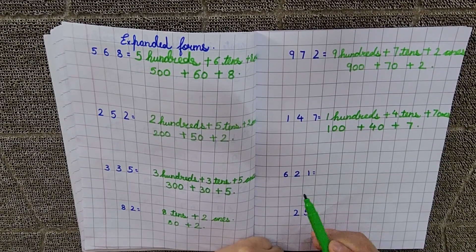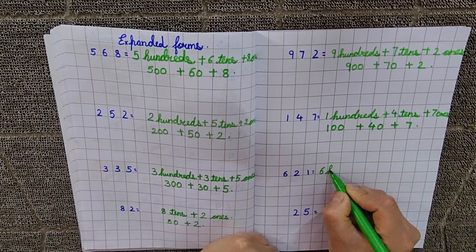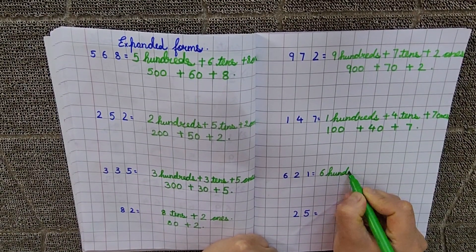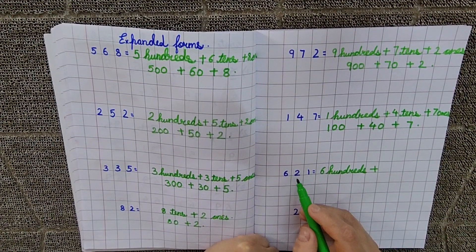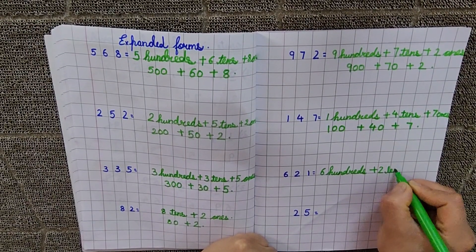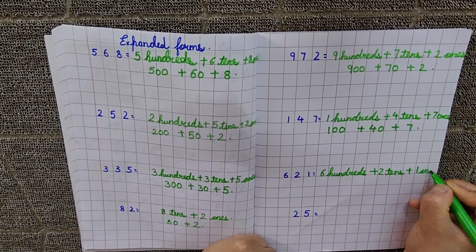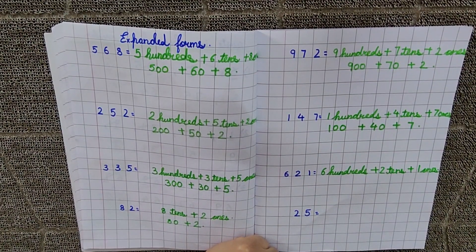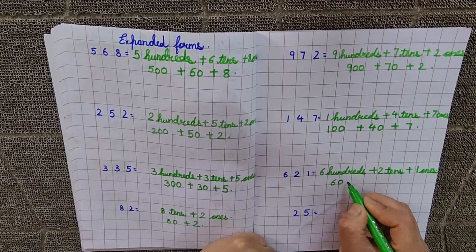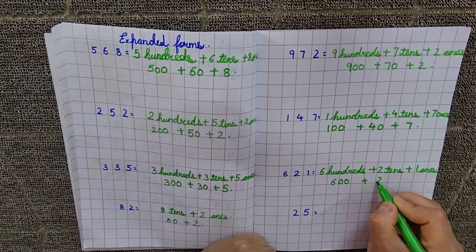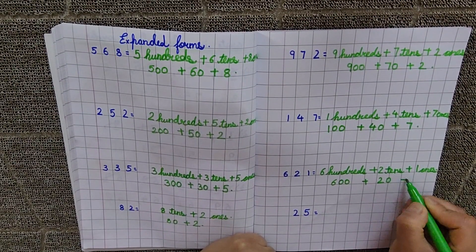Now, 621. 6 kesat, 6 hundreds plus 2 tens plus 1 ones. Now, we will put the zeros. 100 kesat kitni zeros hoti hain? 2 zeros. So, 600 plus 2 kesat, tens kesat kitni zeros hoti hain? 1, 0. So, 20 plus 1.